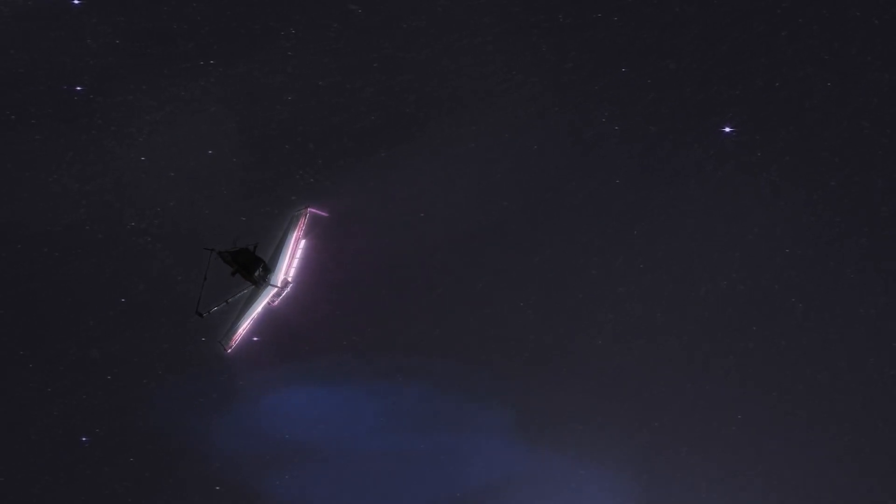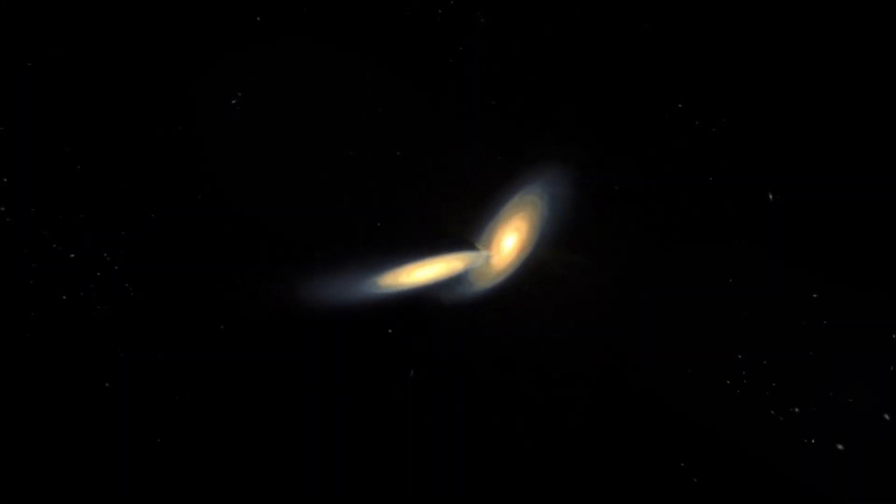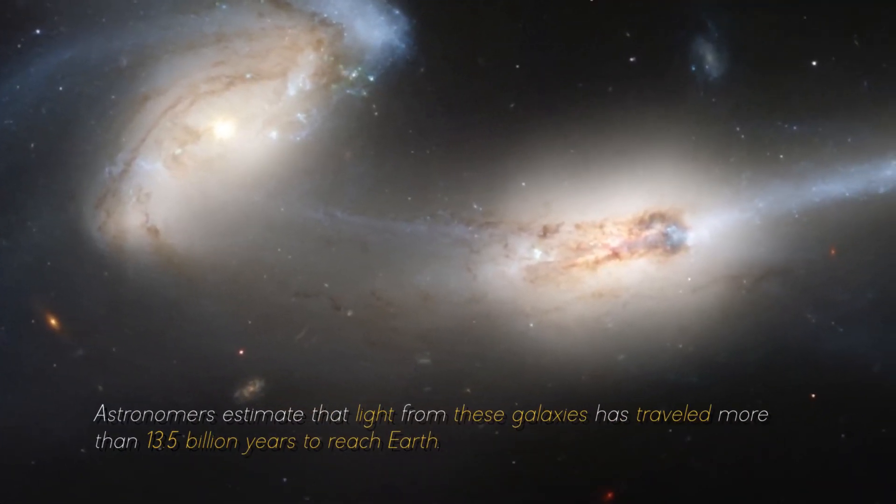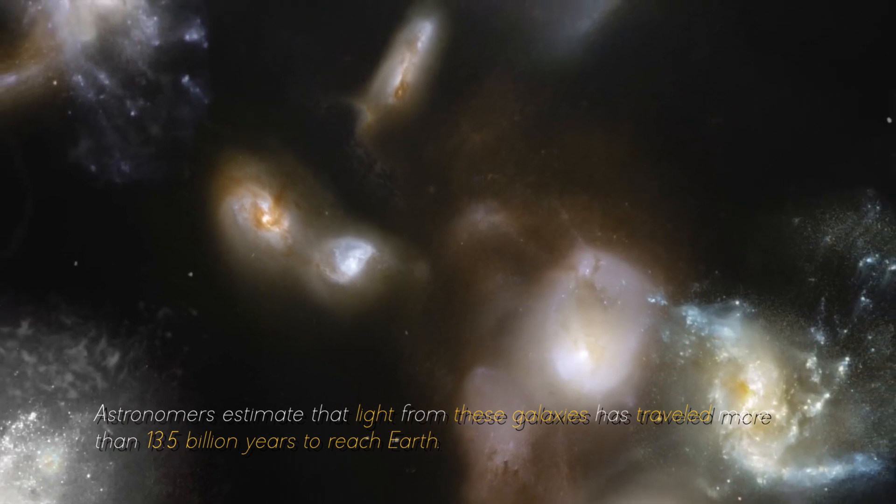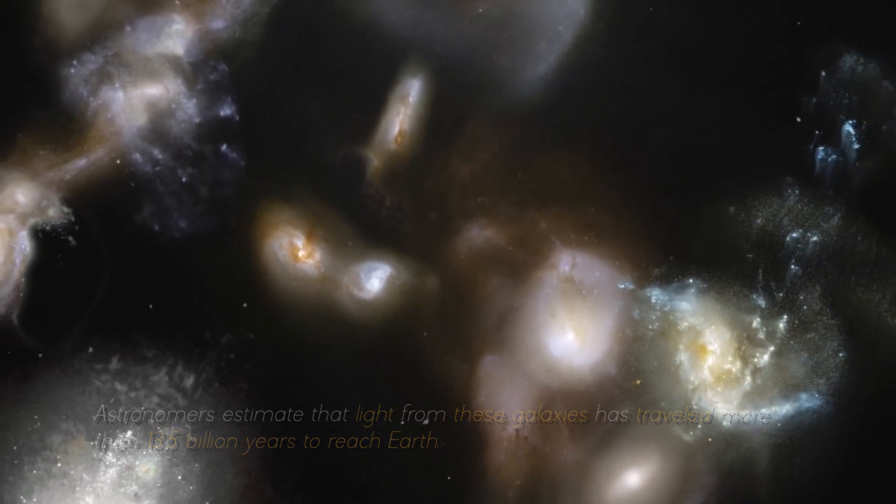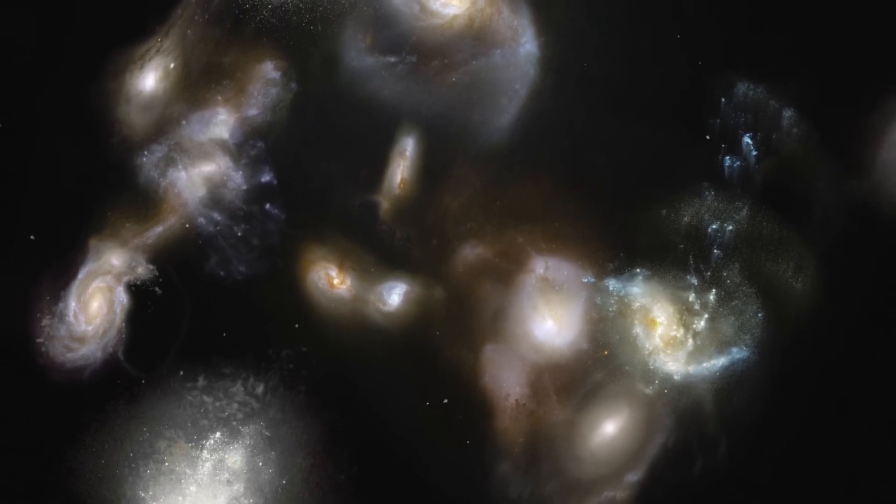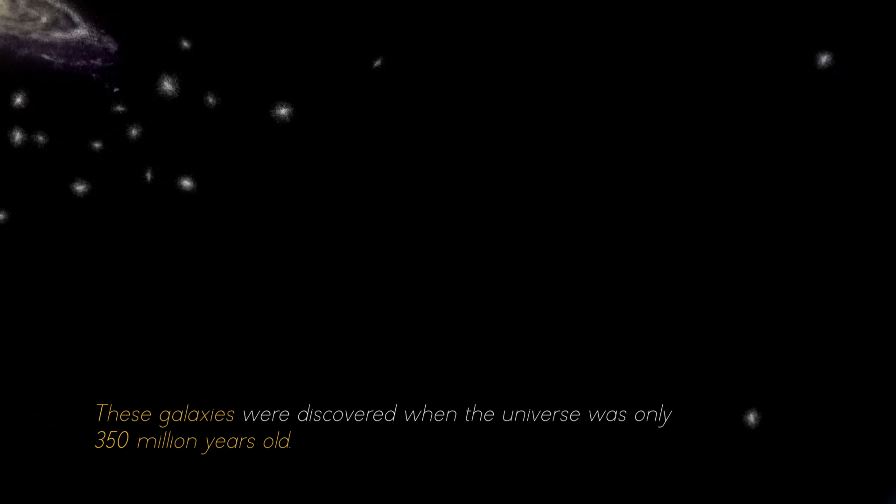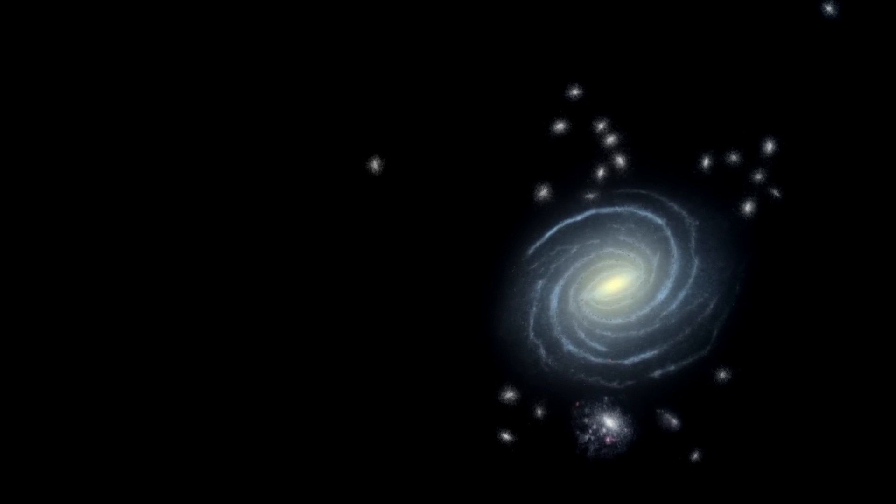Thanks to this revolutionary telescope, we can now observe the oldest galaxies ever seen. Astronomers estimate that light from these galaxies has traveled more than 13.5 billion years to reach Earth, giving us a glimpse into the distant past of the universe. These galaxies were discovered when the universe was only 350 million years old, shedding light on how quickly the first generations of galaxies emerged.